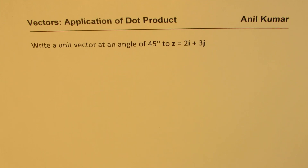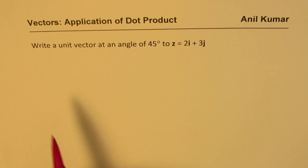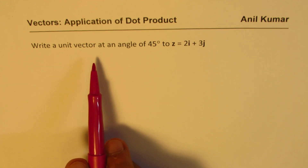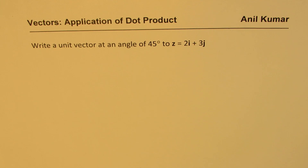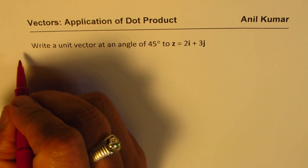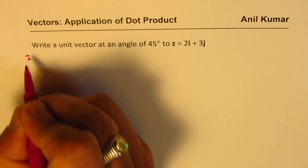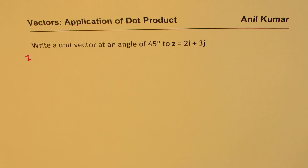I'm Anil Kumar. Here is a question from our friend on the popular website Quora. My response is that to write a unit vector at an angle of 45 degrees to the given vector, we could actually adopt three methods — well, there could be more, but I know about three.